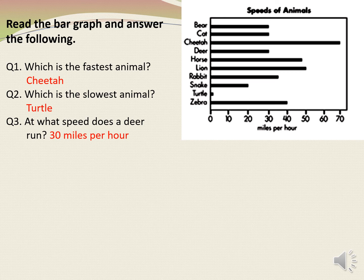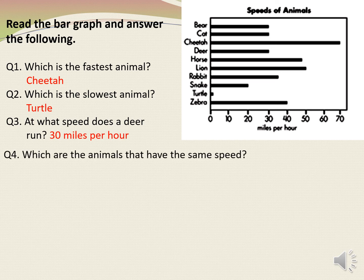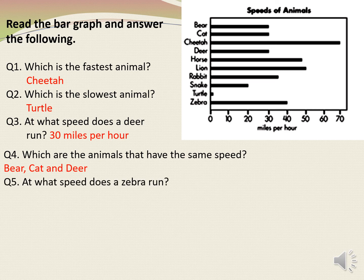Next: at what speed does a deer run? To find out the answer, we need to see the bar which represents the speed of a deer. And we get to know that it is 30 miles per hour. Next question: which are the animals that have the same speed? To find out the answer, we need to see the bars which are of same length. Therefore, the answer is deer and cat. Next question: at what speed does a zebra run? We need to see the bar which represents the speed of a zebra. Therefore, our answer will be 40 miles per hour.